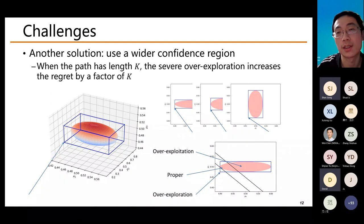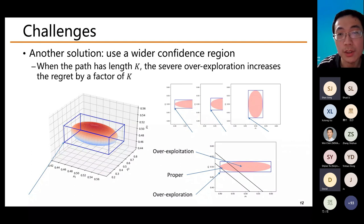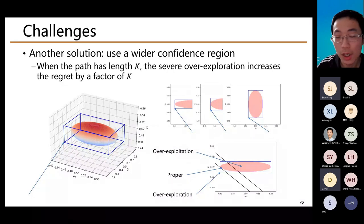However, in the classic setting the upper confidence bound itself is the best point for the exploration-exploitation trade-off. We can divide the space into three regions: the proper region, the over-exploitation region near the empirical mean, and the over-exploration region far from the empirical mean. When using the cube and choosing the lower-left point to find the minimum path, this point always locates in the over-exploration region. When the path has length k, this severe over-exploration can increase regret by a factor of k. So UCB-based solutions either suffer from exponential implementation cost or higher regret.